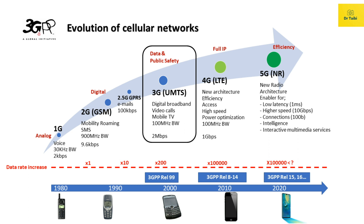To improve on this, 3rd generation mobile communication started with the introduction of UMTS, the Universal Mobile Terrestrial Telecommunication System. UMTS has a data rate of 384 kbps and it supports video calling for the first time on mobile devices. 3G was good, but not good enough.